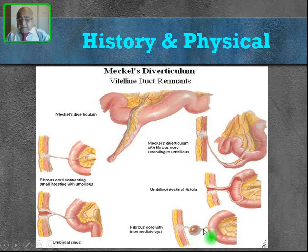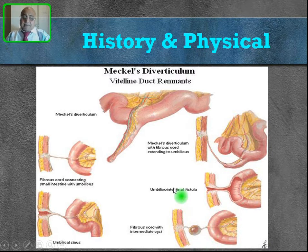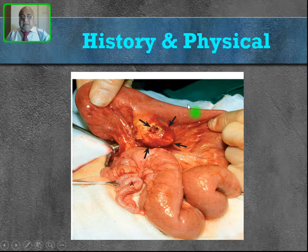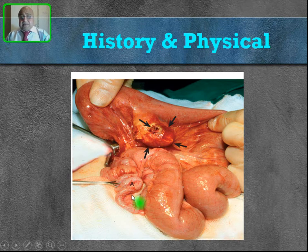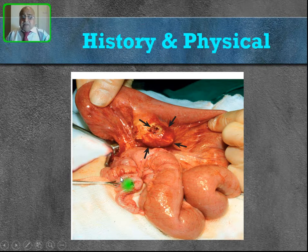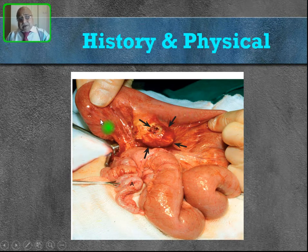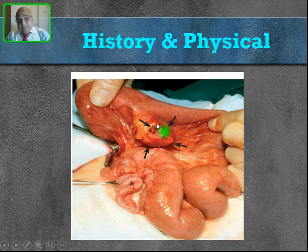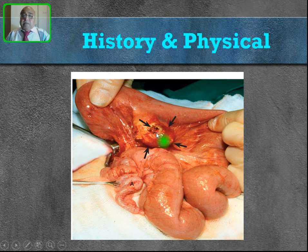Sometimes only the central part of the VI duct is patent while both the proximal and distal parts are obliterated — this will form a cyst. In one case shown here, the abdomen was opened thinking it was appendicitis, but after opening, the distal ileum was pulled out and an inflamed and perforated Meckel's diverticulum was found.